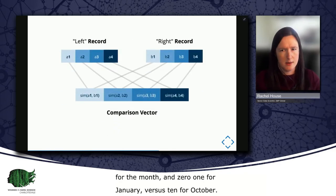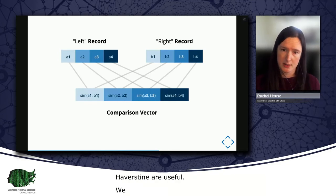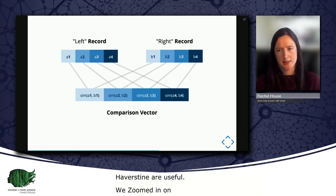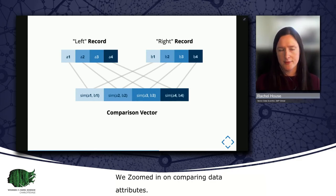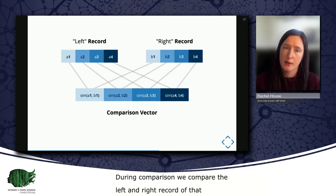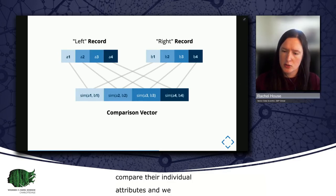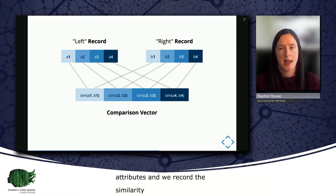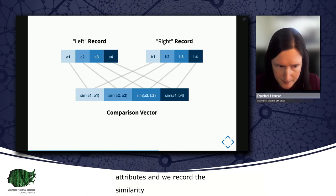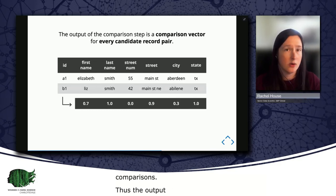We really zoomed in on comparing individual data attributes, so I'd like to zoom back out to put all this in context for the comparison step. So the input to the comparison step is a collection of candidate record pairs. And during comparison, for each candidate pair, we compare our left and our right record of that pair. To compare two records, we compare their individual attributes and we record the similarity score of those comparisons. And those similarity values are then concatenated into a comparison vector for the record pair, which summarizes the similarity of the two records as determined by their individual attributes. Thus, the output of the comparison step is a comparison vector for every single candidate record pair.